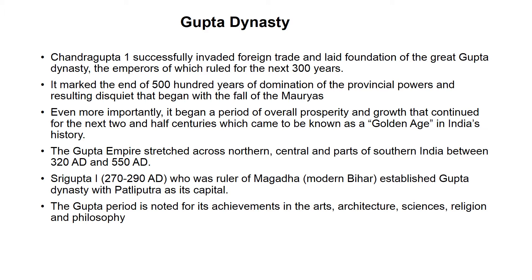Please don't confuse between Chandragupta I and Chandragupta Maurya. Chandragupta I successfully repelled the foreign threat and laid the foundations of the Gupta dynasty, the emperors of which ruled for the next 300 years. It marked the end of 500 years of domination of provincial powers and the resulting strife that began with the fall of the Mauryas. Even more importantly, it began a period of overall prosperity and growth that continued for the next two and a half centuries, which came to be known as the Golden Age in India's history.